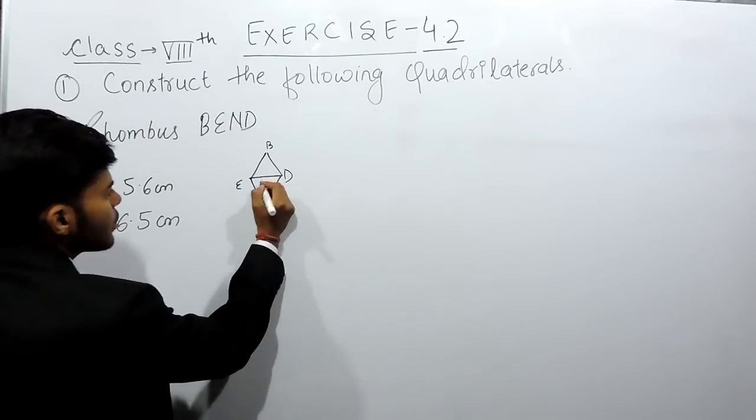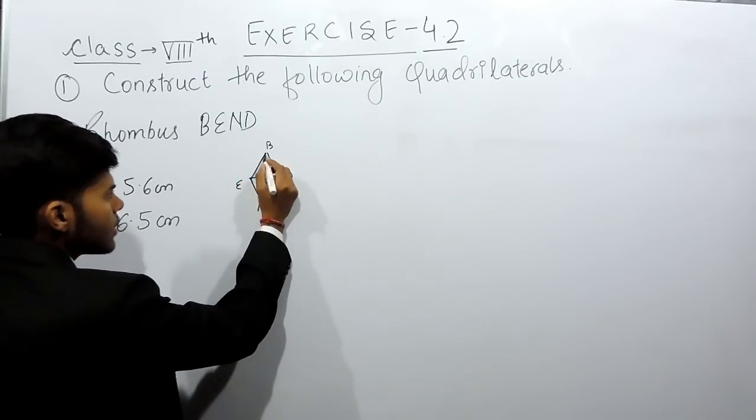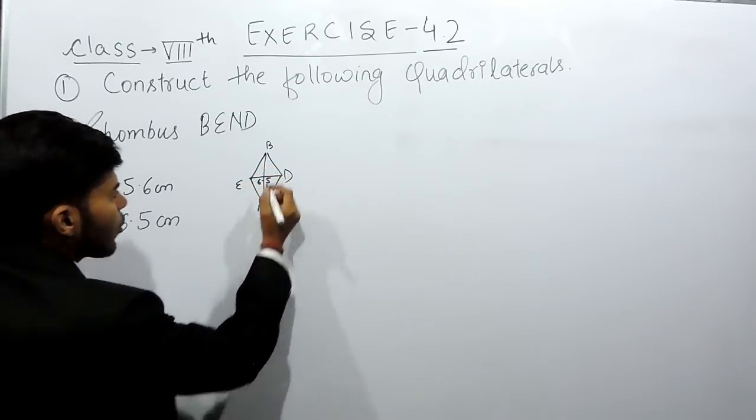Now, DE is given to be 6.5 cm and BN, this diagonal, is given to be 5.6 cm.